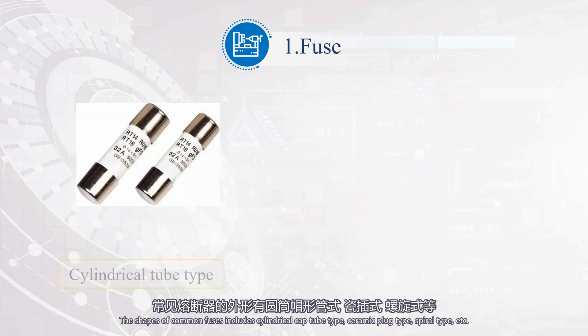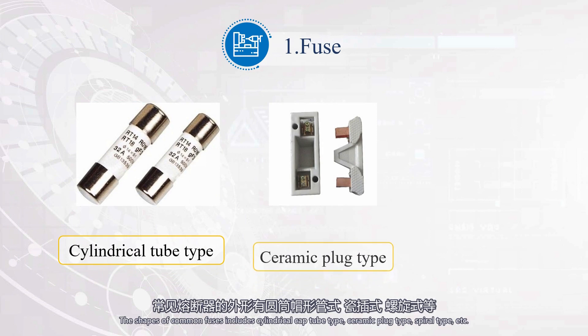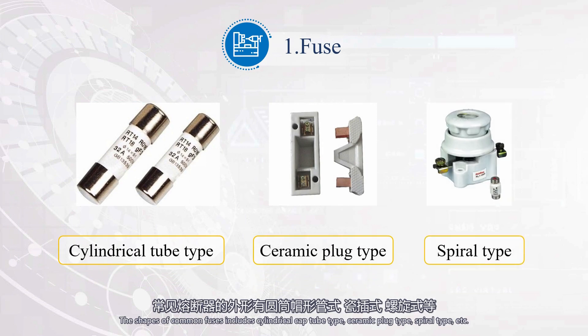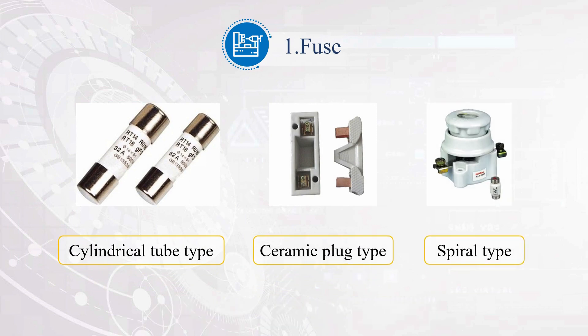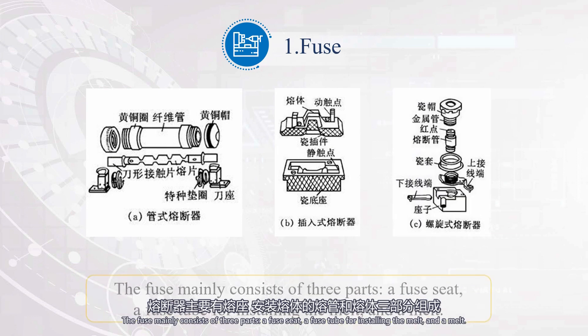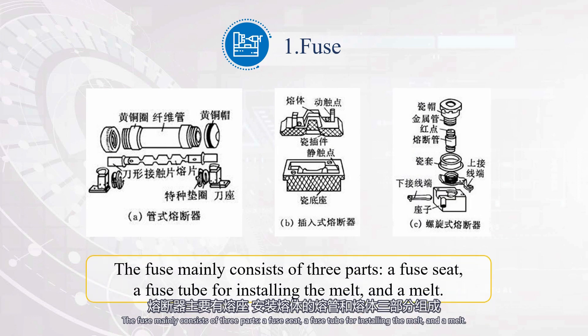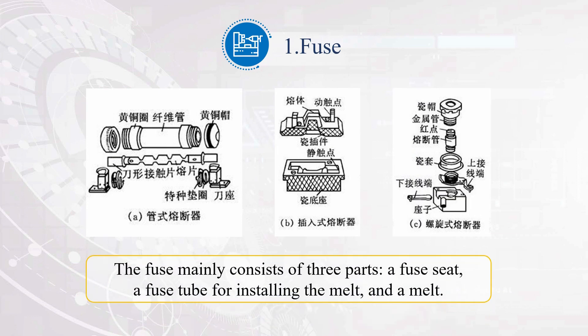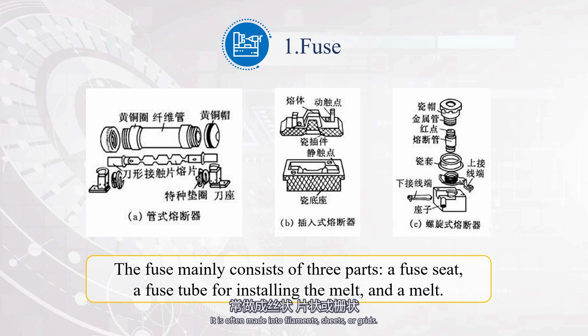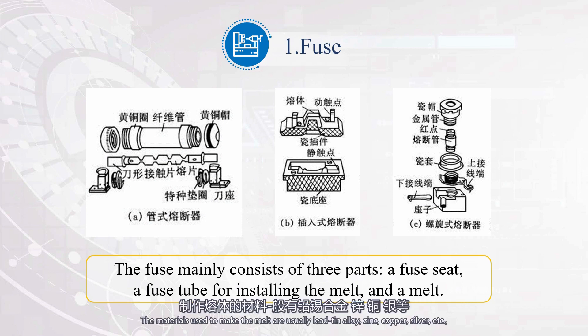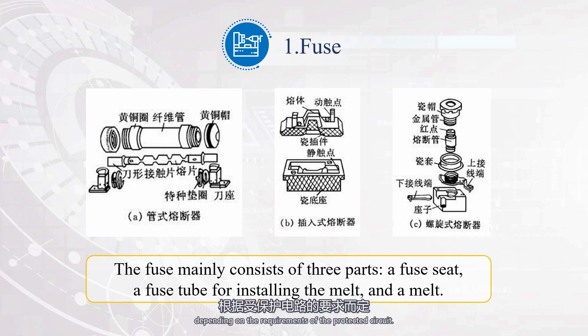The shapes of common fuses include cylindrical cap tube type, ceramic plug type, spiral type, etc. The fuse mainly consists of three parts: a fuse seat, a fuse tube for installing the melt, and a melt. The melt is the core of a fuse, often made into filaments, sheets, or grids. The materials used to make the melt are usually lead-tin alloy, zinc, copper, silver, etc., depending on the requirements of the protected circuit.